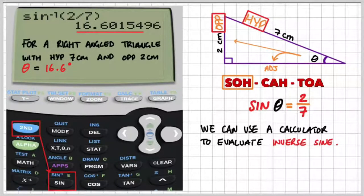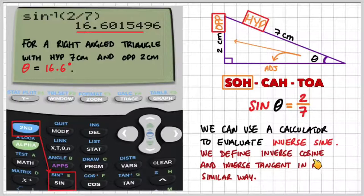Just a quick note, remember that the mode on the calculator is in degrees and not radian. We define inverse of cosine and inverse of tangent in a similar way. So you can use the calculator functions cosine and tangent with the shift key.